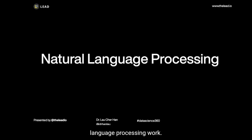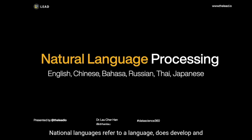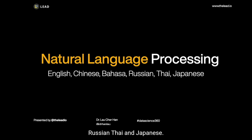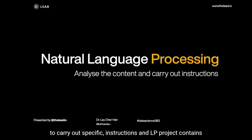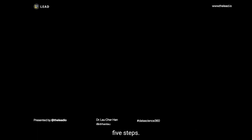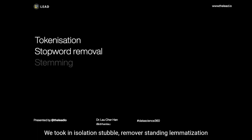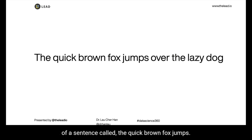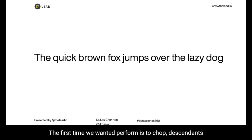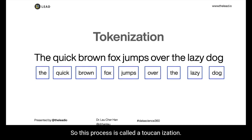So how does natural language processing work? Natural languages refer to languages developed and evolved naturally in humans, such as English, Chinese, Bahasa, Russian, Thai, and Japanese. The processing part means we analyze the content to extract meanings, intentions, and semantics, and use this information to carry out specific instructions. A typical NLP project contains five steps: tokenization, stop word removal, stemming, lemmatization, and part-of-speech tagging. For example, if we have a sentence — 'The quick brown fox jumps over the lazy dog' — the first step is to chop the sentence into the smallest units of information you need, which are words. This process is called tokenization.